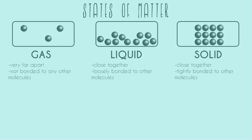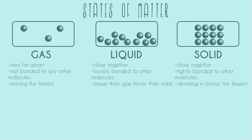Continuing to talk about how these states of matter relate to other atoms or molecules of their same type: gas molecules are not bonded to any other molecules — each gas atom or molecule is completely by itself, just whizzing around. Whereas both liquid and solid are bonded to other liquid and solid atoms or molecules. In general, liquids are loosely bonded to other molecules, whereas solids are tightly bonded to other molecules.